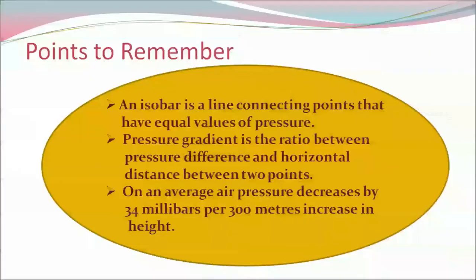Now let's do a quick recap. An isobar is a line connecting points that have equal values of pressure. Pressure gradient is the ratio between the pressure difference and horizontal distance between two points. On an average, air pressure decreases by 34 millibars per 300 meters increase in height.